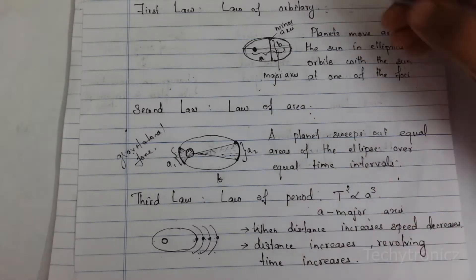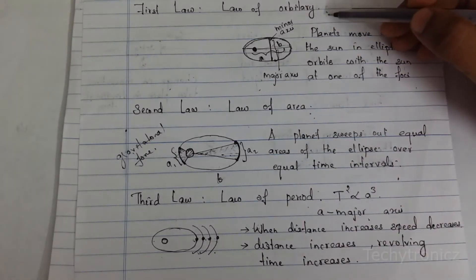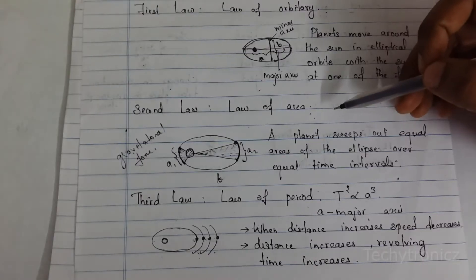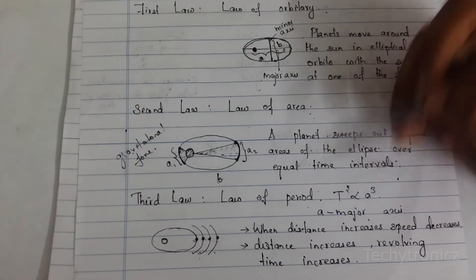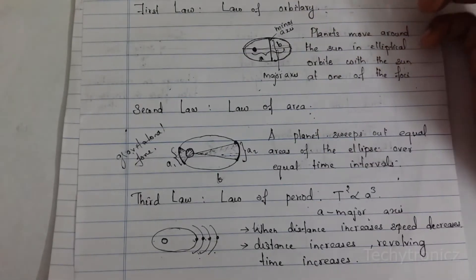So the first law is law of orbits, then law of area, then law of period.